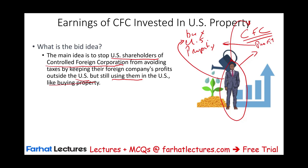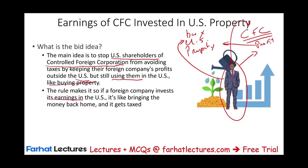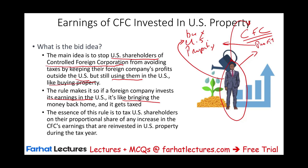The rule is to treat it as if the foreign company invests its earnings in the U.S. — as if bringing the money back home — and it gets taxed. So if this controlled foreign corporation purchases U.S. property, the individual who owns shares in this CFC is treated as if they brought the money back for themselves. Under those circumstances, you get taxed. The essence of this rule is to tax U.S. shareholders on their proportional share of any increase in the CFC's earnings reinvested in U.S. property during the year.